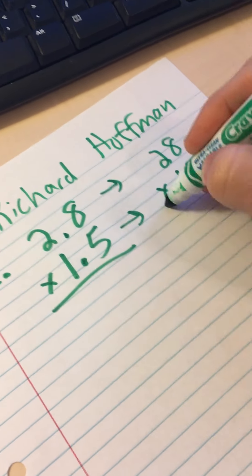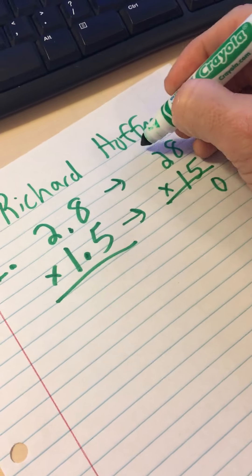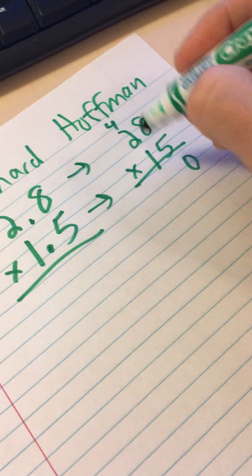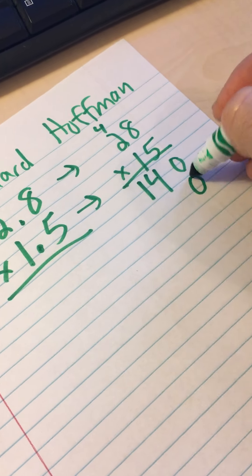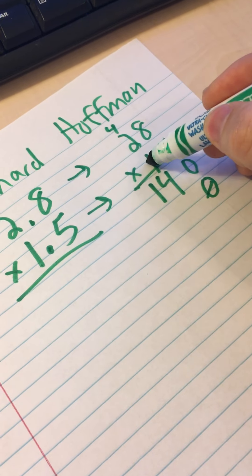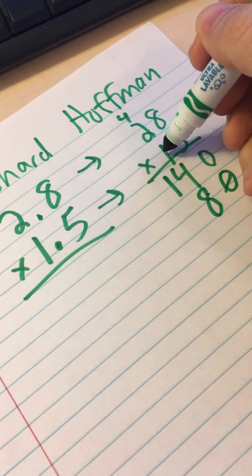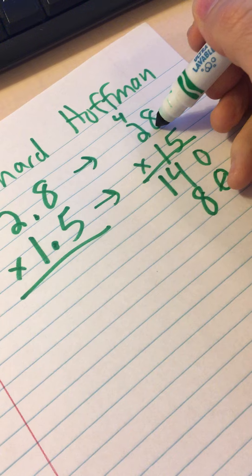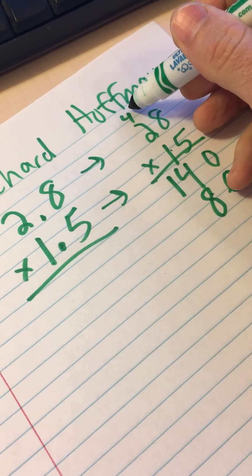And solve. Eight times five is forty. Five times two is ten plus four is fourteen. Put a zero placeholder. One times eight is eight. Noticing that I'm also showing with my marker how I'm multiplying one times eight as I'm saying it. One times two is two plus four.